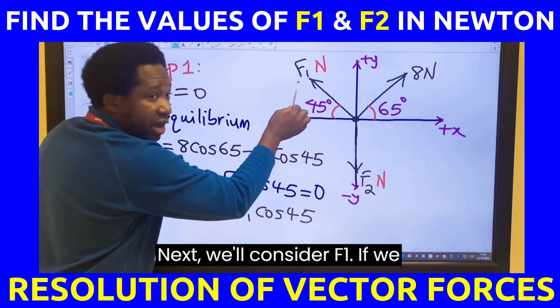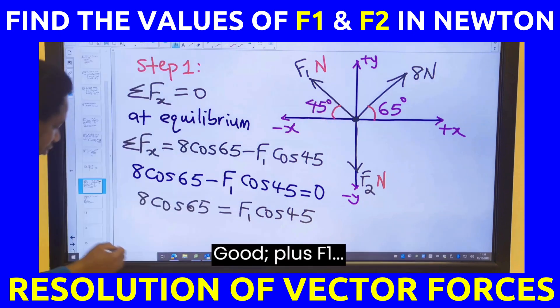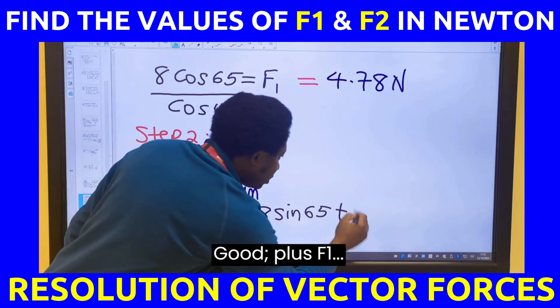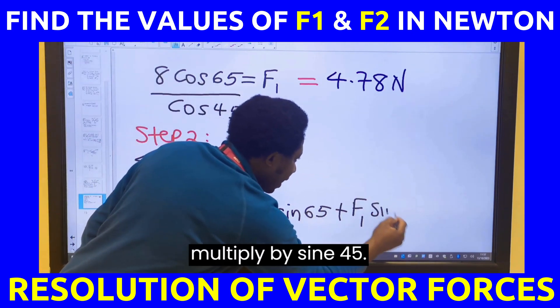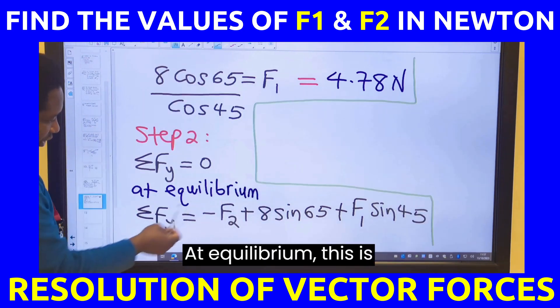Next, we'll consider F1. If we resolve F1 here, what do we have? Plus F1 multiplied by sine 45. At equilibrium, this is 0.